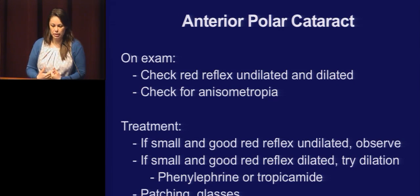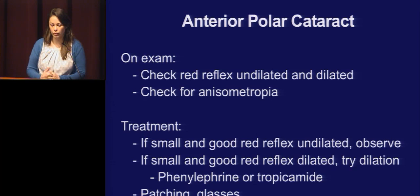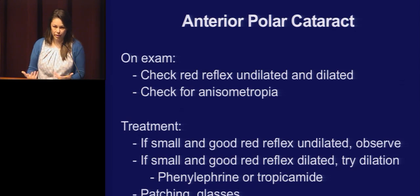You also want to check for anisometropia. If it's small and you have a good red reflex, you can just watch them every four to six months while they're in the amblyogenic range. If it's small with a good red reflex only when dilated, you can try dilation and observation using something like phenylephrine or tropicamide, since you don't want the effect on accommodation. Don't forget about patching and glasses — just because they have a cataract doesn't mean you jump to surgery.